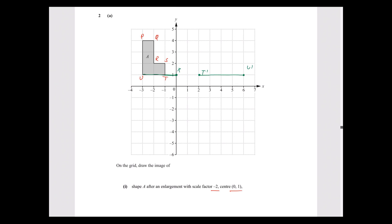Now let's enlarge S. T's length from center is one unit, and S is one unit from T. That distance becomes 2 units in the enlargement, so S' is two units below T'. The segment SR is one unit, so S'R' is two units. But R, instead of being leftwards of S, is now rightwards of S'. Here is our R'.